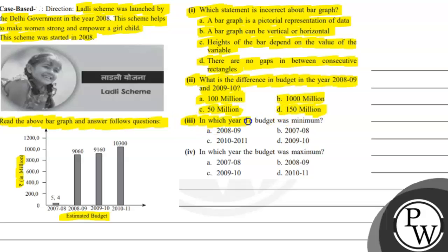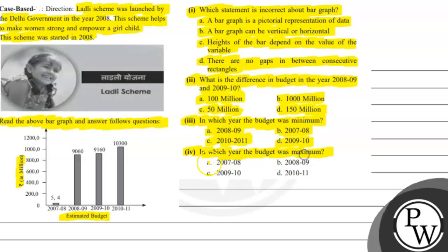Third question: in which year was the budget minimum? Option A: 2008-09. Option B: 2007-08. Option C: 2010-11. Option D: 2009-10. Fourth question: in which year was the budget maximum? Option A: 2007-08. Option B: 2008-09. Option C: 2009-10. Option D: 2011-12.